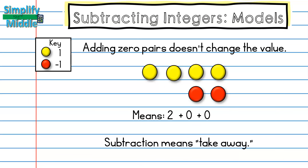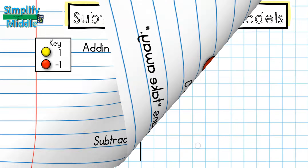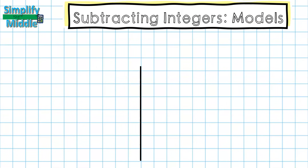Something else we want to think about is that subtracting means to take away. So we are going to be taking away when we're using the counter chips. Let's go ahead and get started.